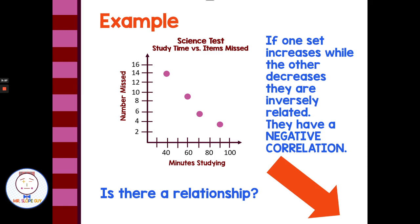We could ask: how long would you have to study to miss no questions on the science test? If we continue the line, it looks like at 0 questions missed we'd be out near 100 minutes. And if we didn't study at all, we'd predict missing somewhere around 16 questions or higher. That would form almost a perfectly straight line, making it easy to use the scatterplot for prediction. The line we're talking about drawing here is called a line of best fit.